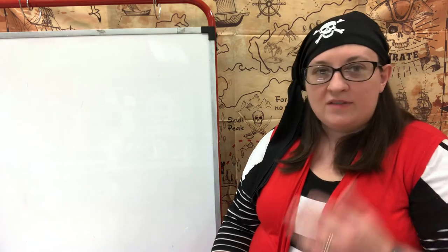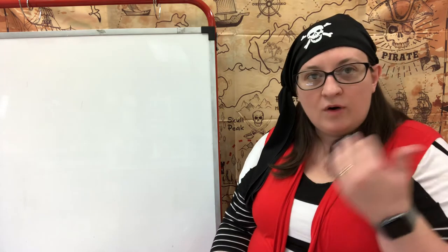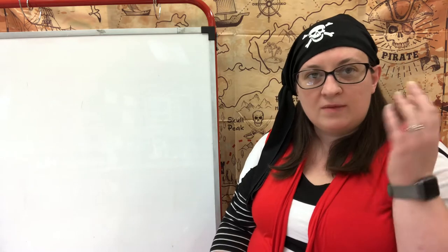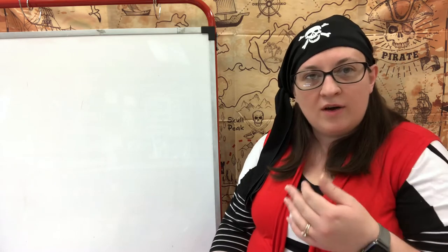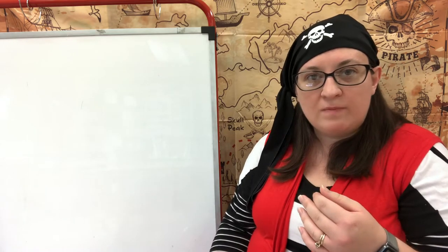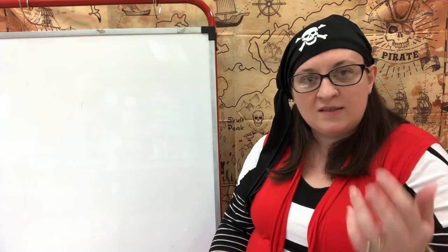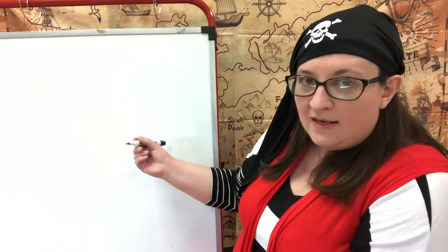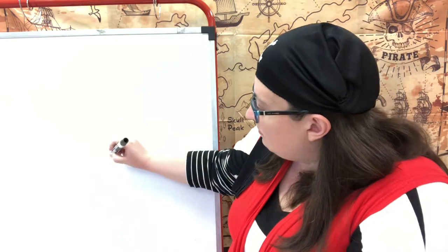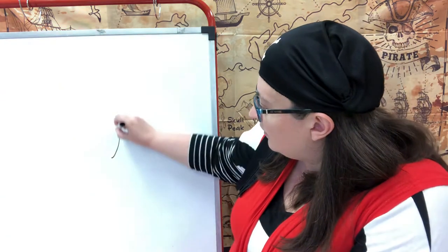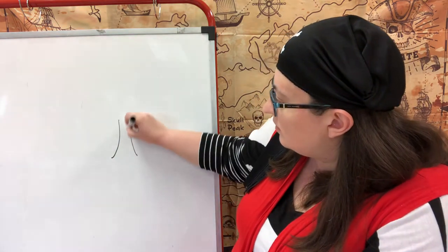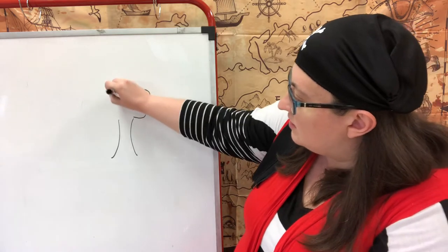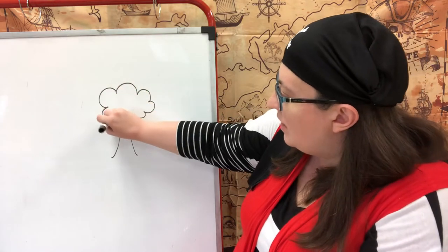We're going to have some things in the foreground in our pirate ship picture, some things in the middle ground, and some things in the background. What that means is some things will look like they're up close. Now we're going to do a pirate ship picture, not a tree - I'm just using this as an example.